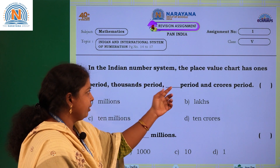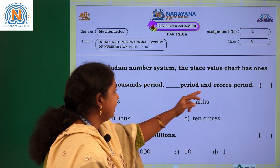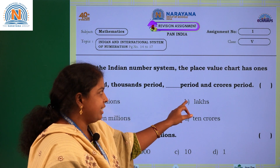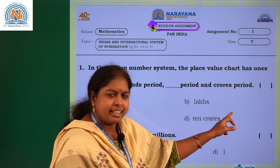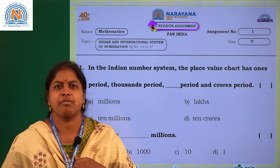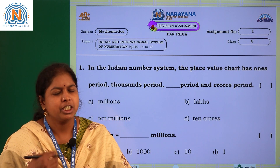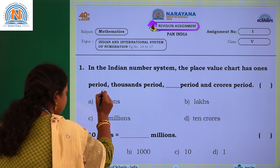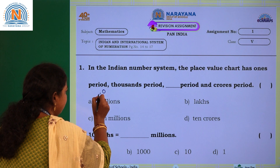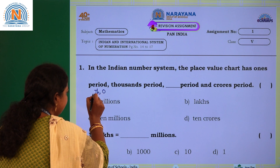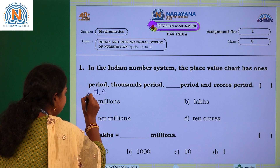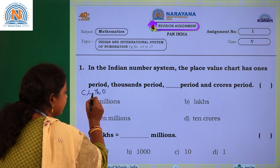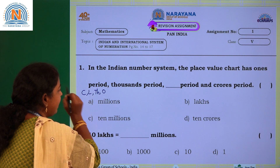In the Indian number system, the place value chart has a ones period, thousands period, dash period, and crores period. How many periods are there in the Indian place value system? There are four: ones period, thousands period, lakhs period, and crores period.